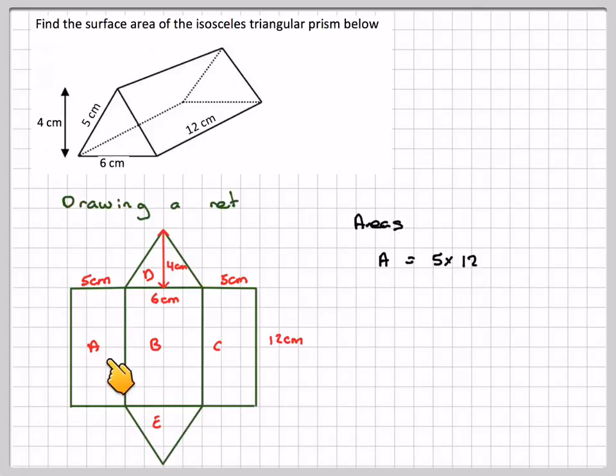So A will be 5 times 12, this length is 12, which is 60 centimetres squared. We're talking about area here. B is going to be 6 times 12, which is 72 centimetres squared.